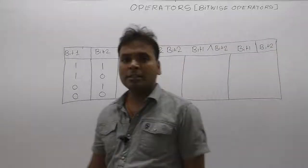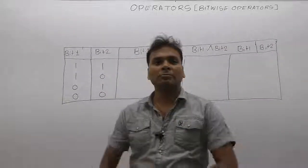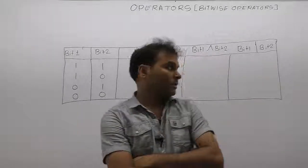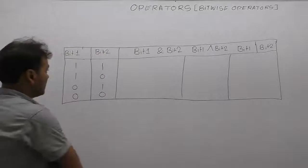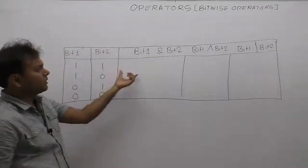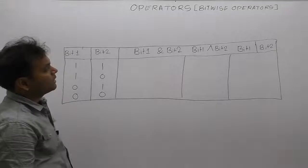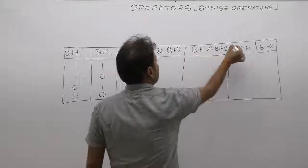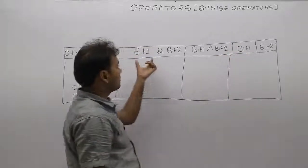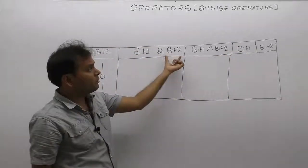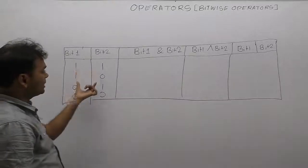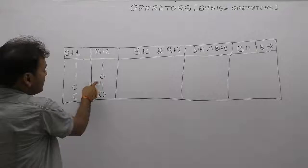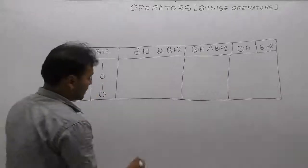Now we cover the remaining bitwise operators: bitwise AND, bitwise XOR, and bitwise OR. We will test some examples for each. The operators are applied for bit values — the first operand and the second operand. In each case, both bits are compared: first is one, second is zero, zero one zero, and so on.